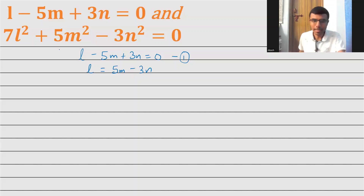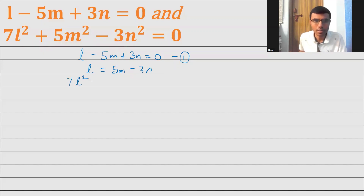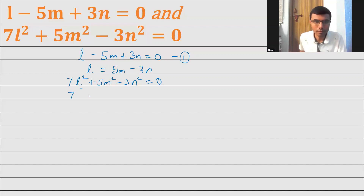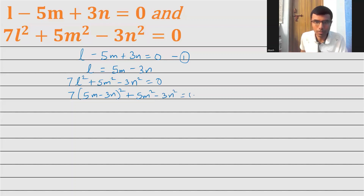Next, what is my second relation? This one: 7l squared plus 5m squared minus 3n squared equal to 0. Now what is my l? l is nothing but 5m minus 3n. That's what I'm going to substitute here. So 7 into (5m minus 3n) whole square plus 5m squared minus 3n squared is equal to 0.